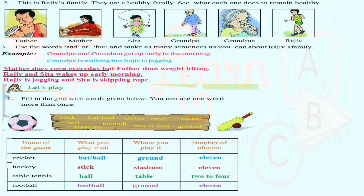This is Rajiv's family — a very healthy and strong family. See what each one does to remain healthy. The family members are father, mother, Sita, grandpa, grandma, and Rajiv. Using 'and' and 'but': Grandpa and grandma get up early in the morning. Grandpa is walking but Rajiv is jogging. Mother does yoga every day but father does weight lifting. Rajiv and Sita wake up early morning. Rajiv is jogging and Sita is skipping rope.